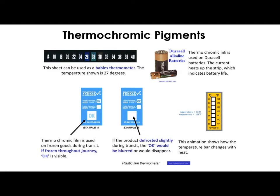There are different applications for thermochromic pigments. Some really clever ones: batteries where you push on the outside and the current between those two points heats up the strip, indicating how much battery life is left. On frozen goods, the film on the outside of the packaging — if the product has stayed frozen throughout its journey, it will still say it's OK. But if the product defrosted slightly, the 'OK' would be blurred or disappear. There are also thermometers for babies — these could be pushed to the baby's forehead rather than trying to put a thermometer in a baby's mouth or under an armpit.